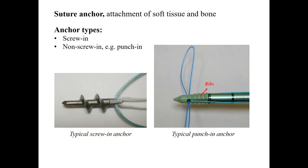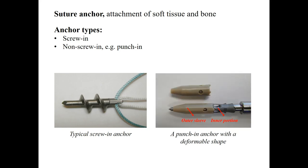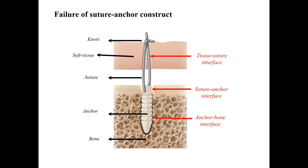A suture anchor construct holds an injured tissue close to the bone until the final stage of tissue remodeling. The anchor fixes the sutures to the bone. Anchors are generally classified as screw-in and non-screw-in types. In screw-in anchors, the threads achieve purchase in the subcortical bone. Non-screw-in anchors are pushed into the bone and might change their morphology after insertion to increase pull-out strength. A typical punch-in anchor is inserted into the bone through press-fit, and after insertion, the ribs of the anchor resist pull-out by friction. In another punch-in design, the inner part is forced inside the outer sleeve to increase pull-out strength. A suture anchor construct could fail at the interfaces between the tissue, suture, anchor, and bone, and all components must work together to achieve a sufficient level of pull-out strength.